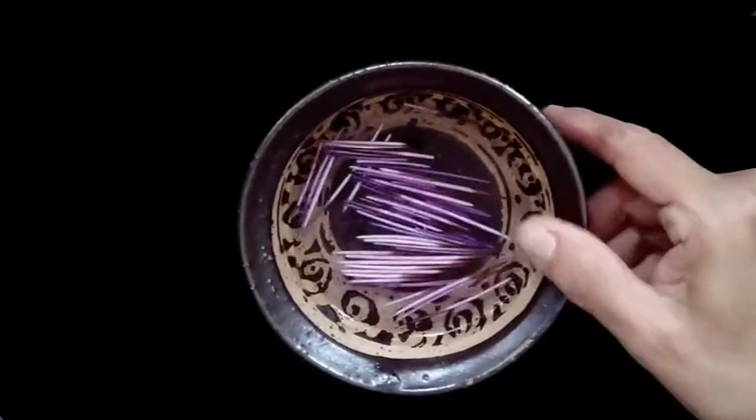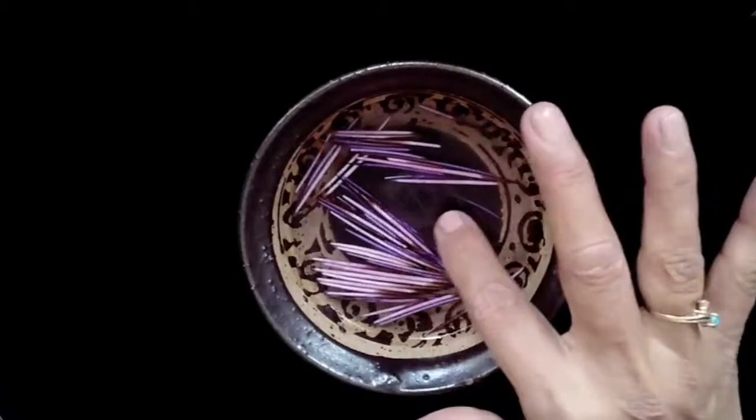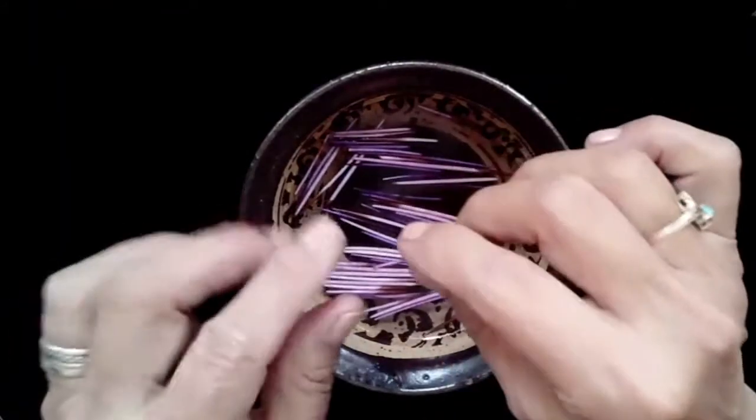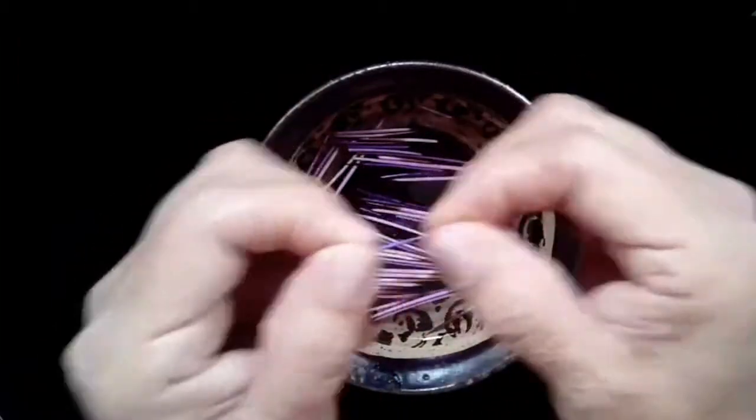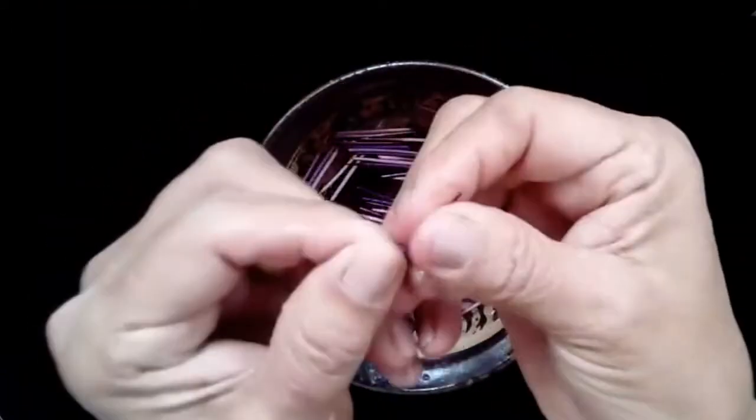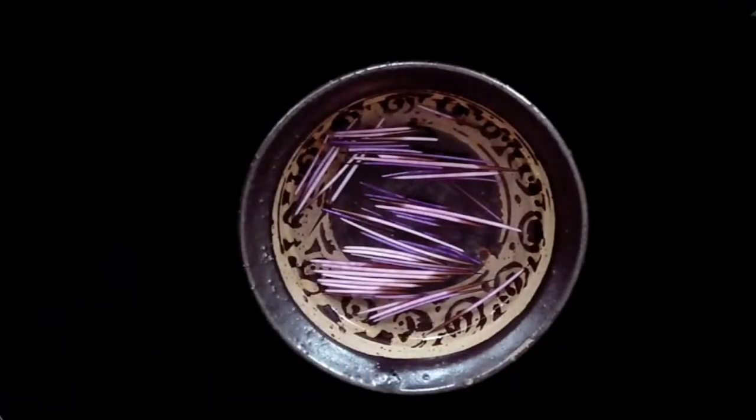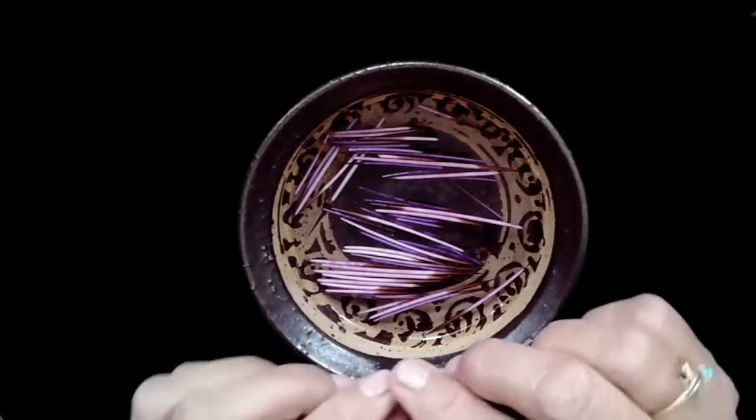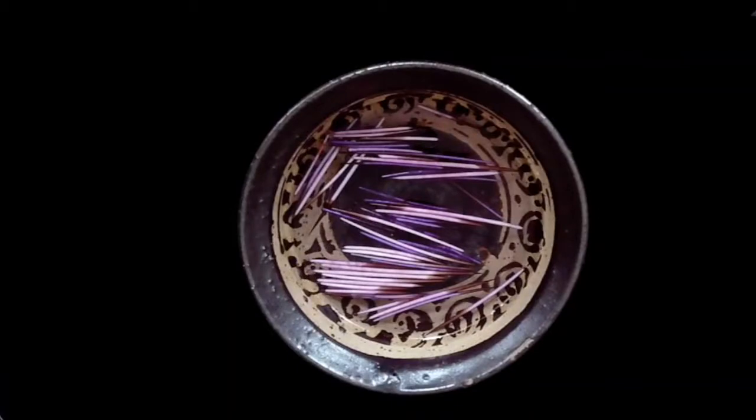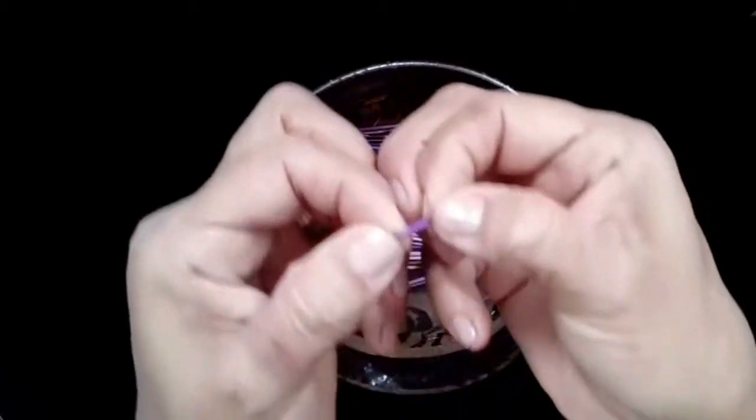When you use porcupine quills, they're made from keratin that also makes up our toenails and fingernails as human beings. The longer you soak them, the more pliable they become. When they're dry they're really stiff and hard; when they're soaked they're very pliable. We're always going to keep them soaked in water. When you use them, you're not going to use the biggest quills. You're going to have to find quills that when you soak them are even, maybe an eighth of an inch wide when you flatten them.